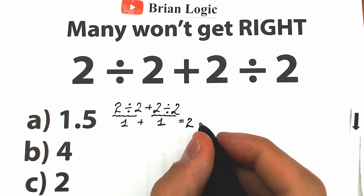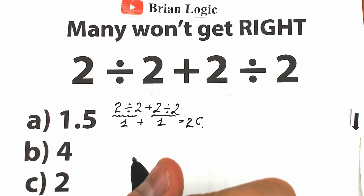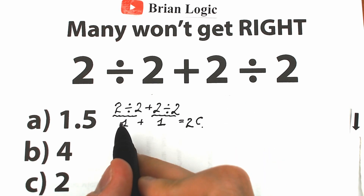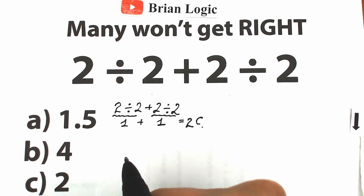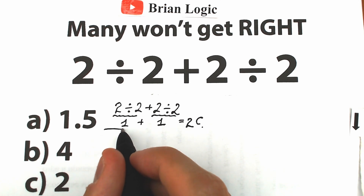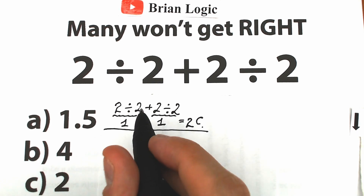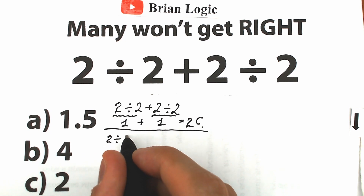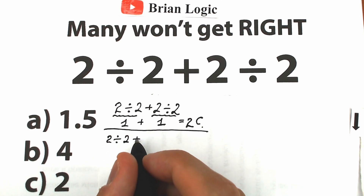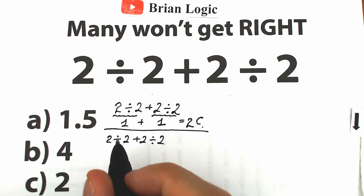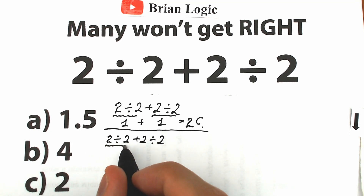So one part of students solves this problem that way — division first on both sides, then addition — and they get option C, which is 2. But there is another type of student who solves this challenge in a completely different way. They go from left to right: first 2 divided by 2 equals 1.